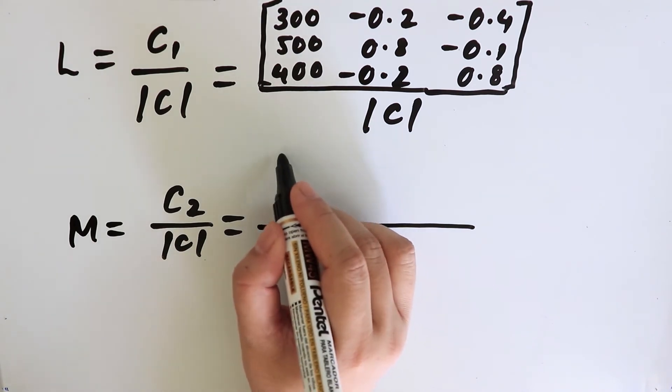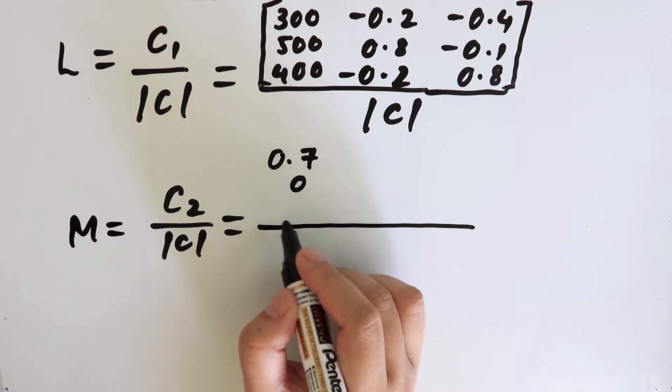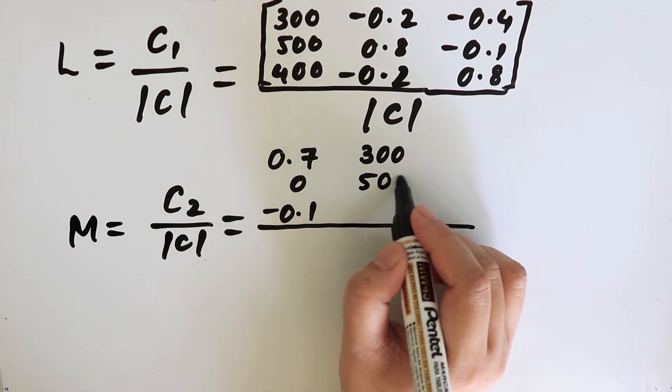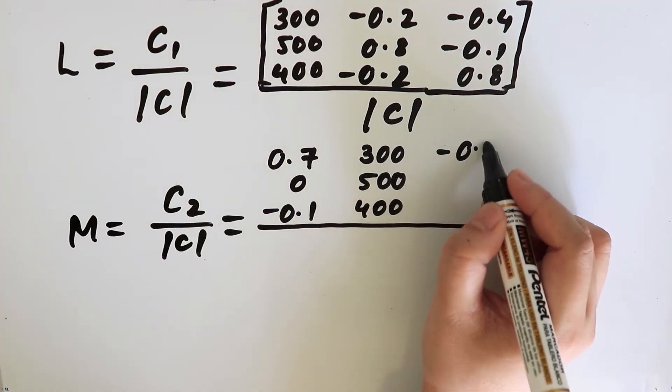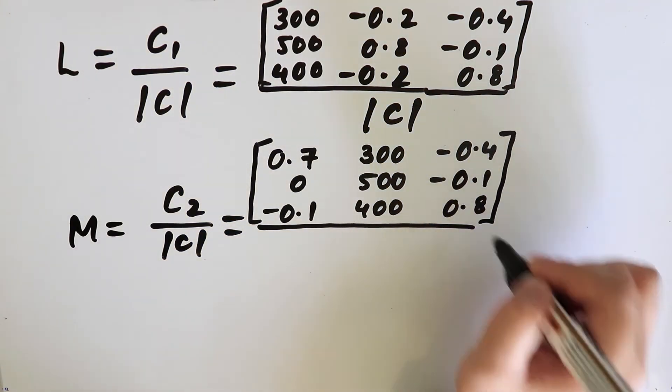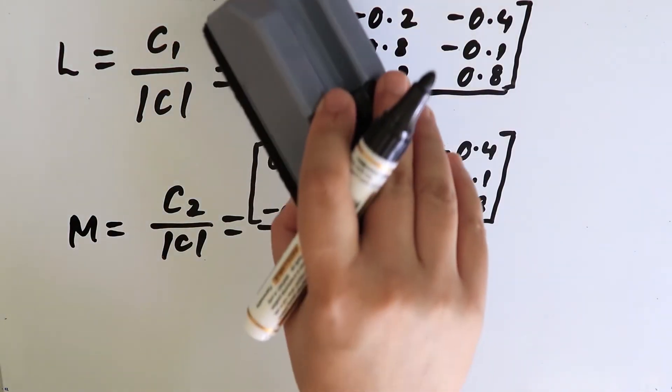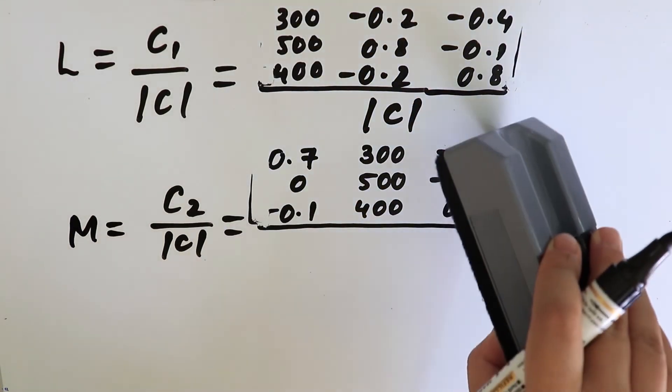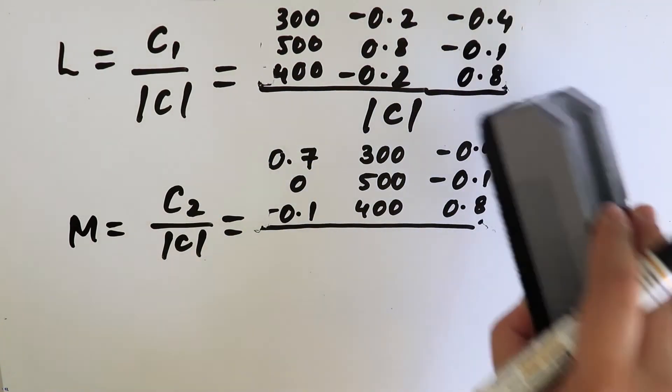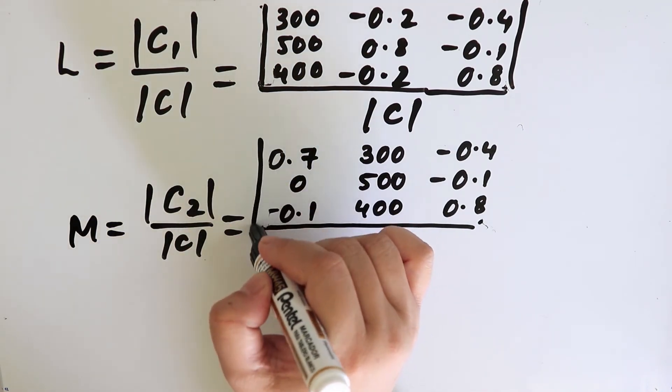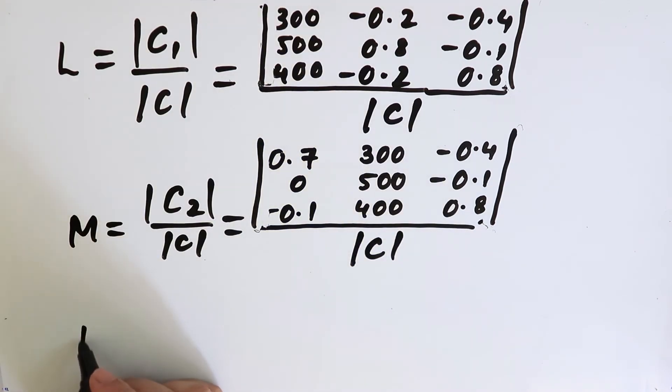The first column was 0.7, 0, and minus 0.1, and the second column will now be replaced with the final demand 300, 500, and 400, and the third column will also remain the same. This will be determinant, not matrix. We will find out the determinant of the matrix C. This is determinant of C1 and this is determinant of C2 divided by C.